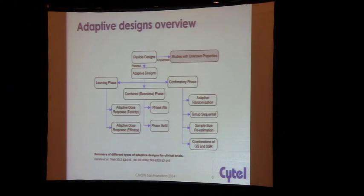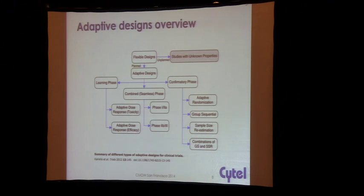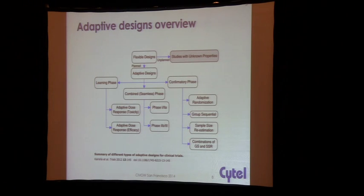I have a couple of slides on the classifications and overview of the types of adaptations people are considering. At the top of this slide there's a box called Flexible Designs — the point being that you have to plan these adaptations. A lot of statistical methods provide statistically valid answers even if you don't plan adaptation, but this won't pass regulatory muster or convince the scientific community, because it will seem like focus-pocus. Below that is what you might call adaptive designs per the FDA's definition, where you pre-plan what you're going to do and then follow through with it.